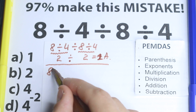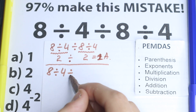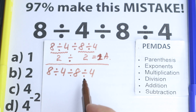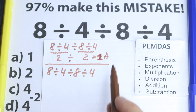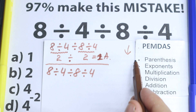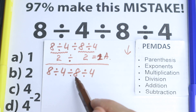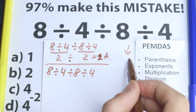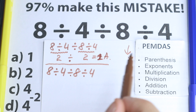So here is our question: 8 divided by 4, divided by 8, divided by 4. Let's solve this according to PMDMC, which works from the top to the bottom. The first step is parentheses. Where do we have parentheses right here? I don't see any parentheses, so we just skip this part.